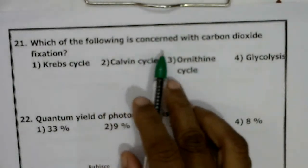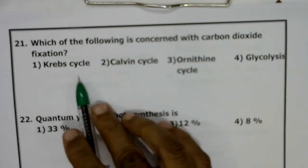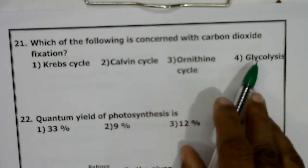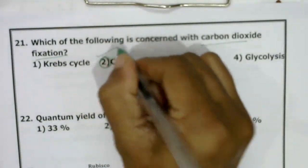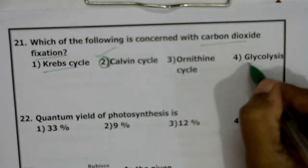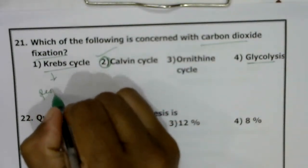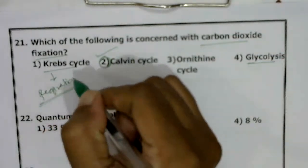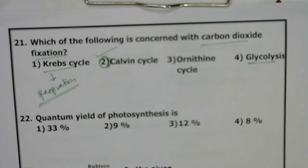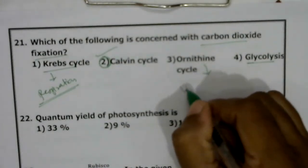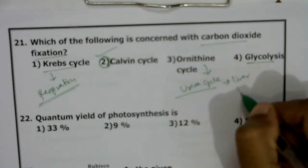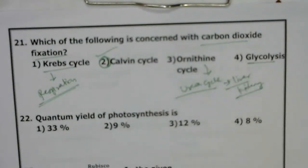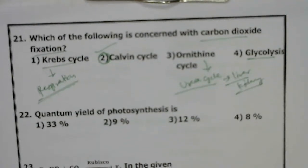Which of the following is concerned with CO2 fixation: Krebs cycle, Calvin cycle, ornithine cycle, or glycolysis? CO2 fixation takes place during the Calvin cycle only. The Krebs cycle and glycolysis are related to respiration — CO2 is released, not fixed. The ornithine cycle (urea cycle) mainly occurs in liver and kidney cells for removal of excretory waste, not CO2 fixation. Correct answer: second option, Calvin cycle.